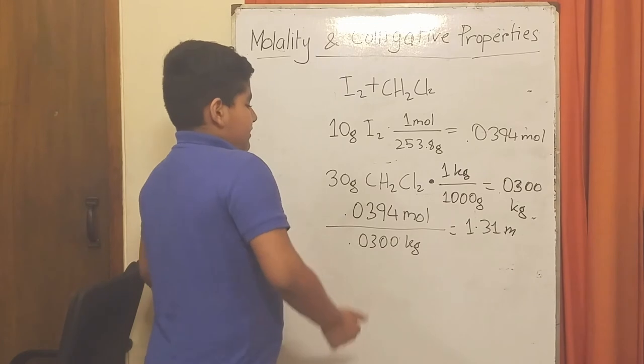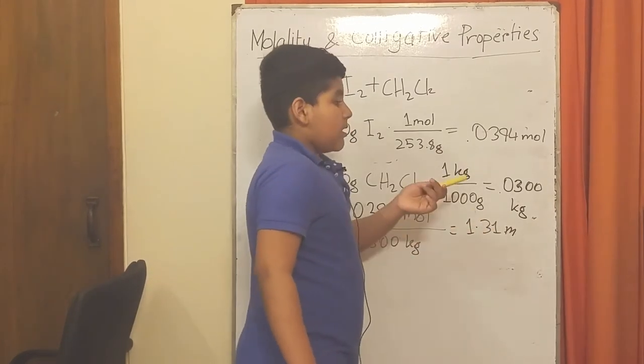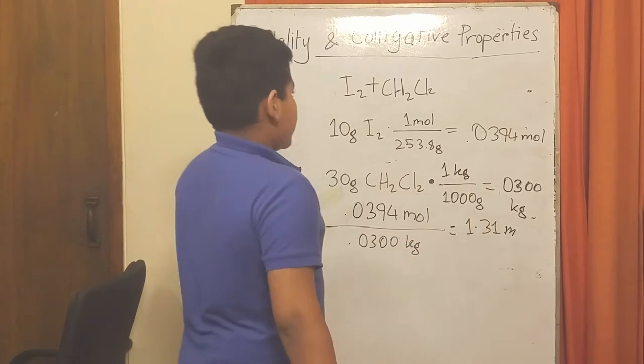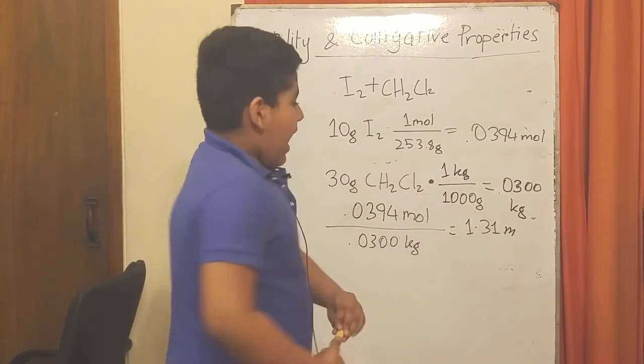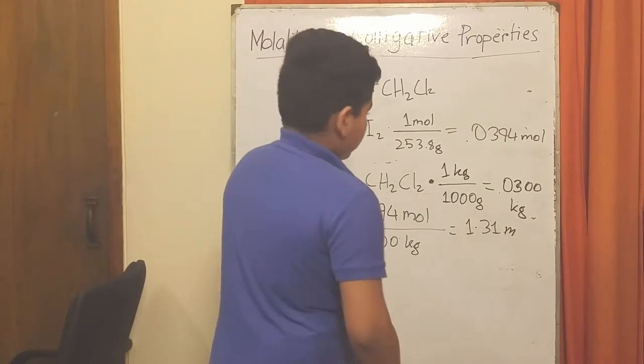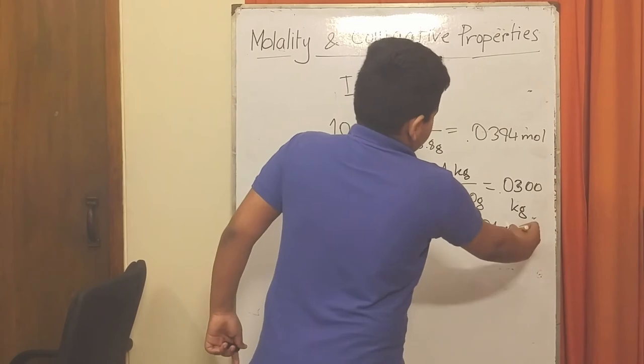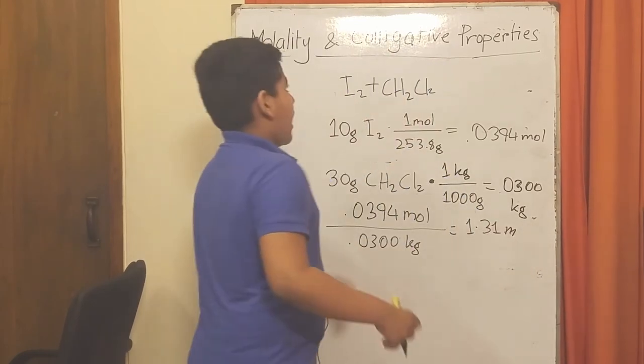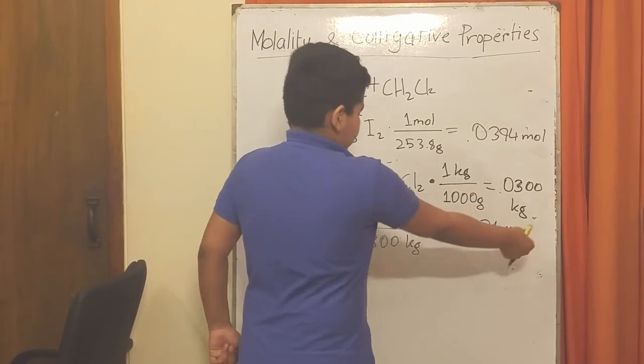If we divide that all up, we get 1.31 molal. So this is a 1.31 molal solution, and we write molality with a lowercase m in italics, rather than the uppercase M of molarity.